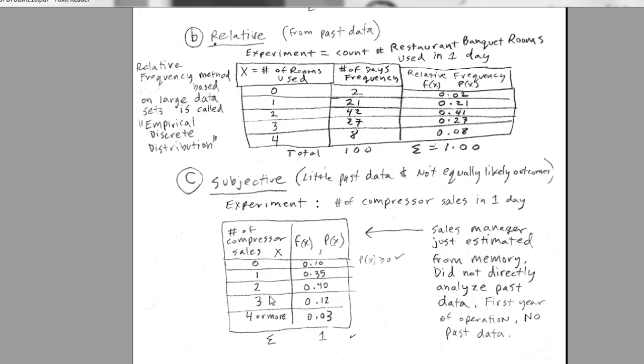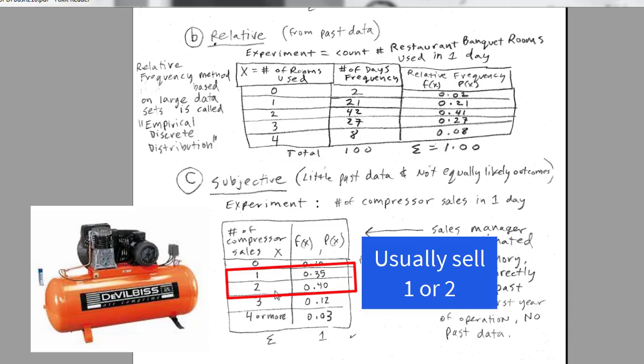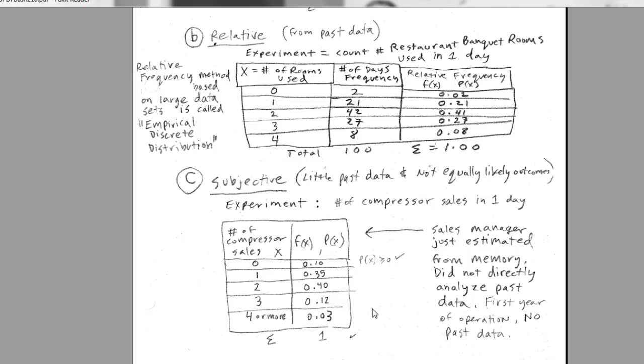The final method is subjective. We have little past data, and we do not have equally likely outcomes. In this example, a sales example, usually there's lots of data. We can look at past records to calculate number of compressors sold at a compressor shop. These are big compressors. So sometimes they don't sell any. Sometimes they sell one. Usually they sell two or three. We list our probabilities. But since we don't have past data, the sales manager just estimated from memory, did not analyze past data. In essence, this was their first year of operation, so there was no past data. People do do subjective. But notice it meets our requirements, adds up to one, each individual probability greater than or equal to 0.